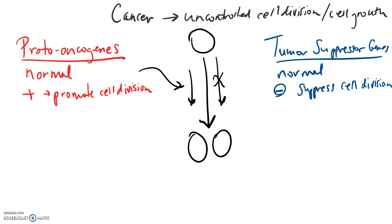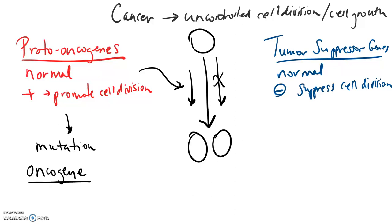Now let's switch gears and ask what happens in this process so that we have uncontrolled cell growth. Cancer occurs when one or multiple mutations occur on either side of this control system, so that the division or the control of division is no longer the way it should be. If we have a mutation in a proto-oncogene, we now call this an oncogene, which would be the cancer-causing form, because it's been mutated.